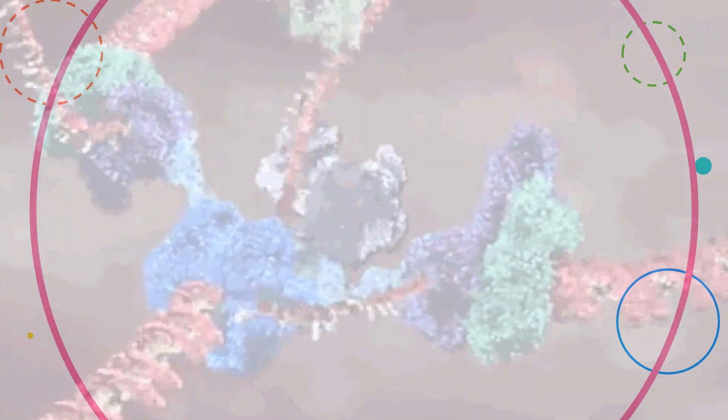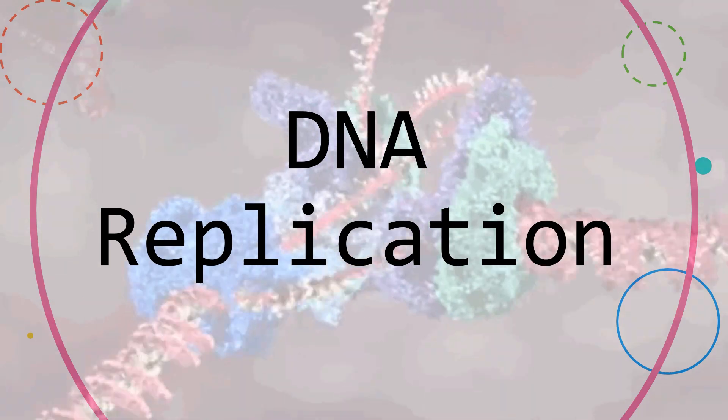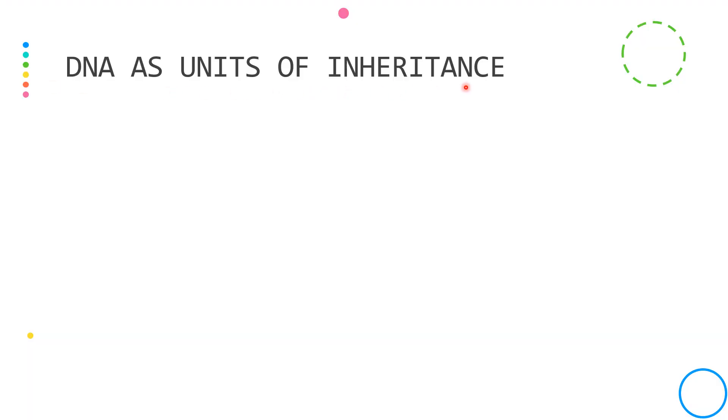Now that we know more about DNA, it is now time to proceed with the replication process. In order to act as units of inheritance, DNA should be able to replicate.